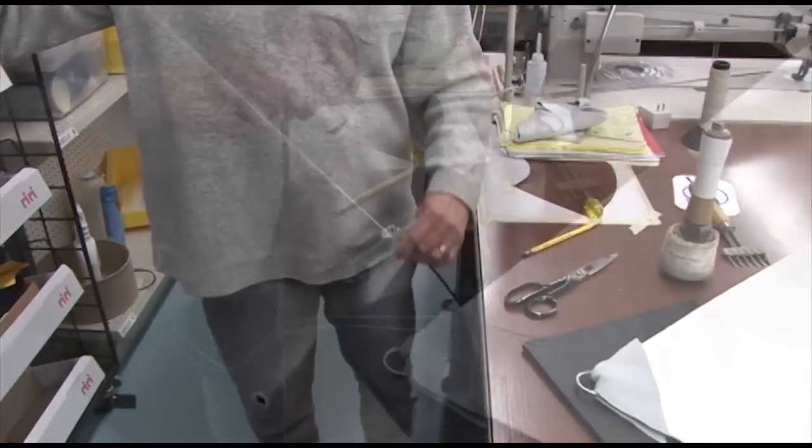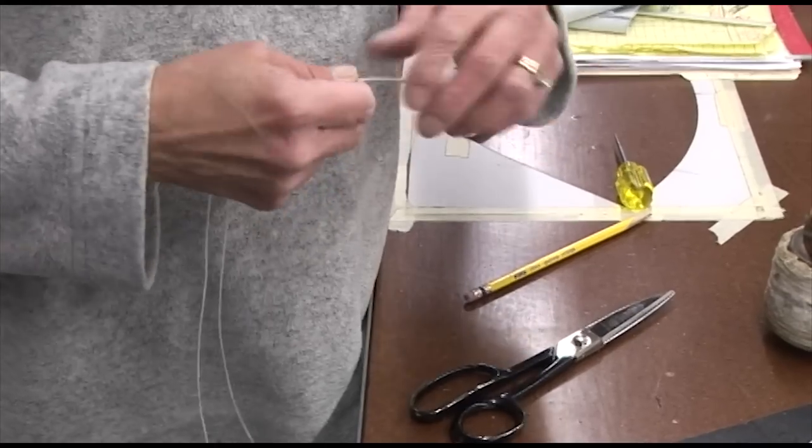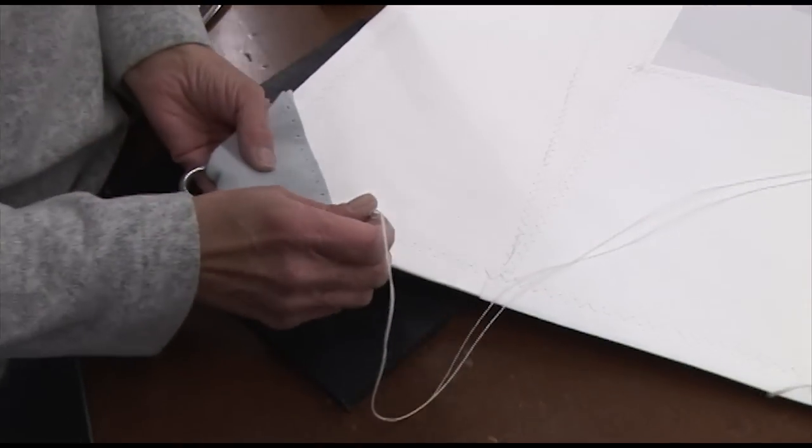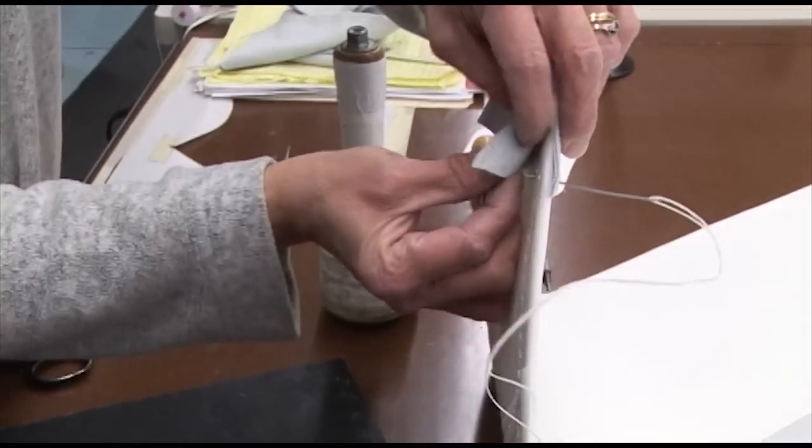Then we'll take our pre-waxed twine and our hand needle that's included in the kit, and we'll feed it through the eye of the needle and create a knot at the end. Then we'll feed it through these pre-punched holes along the edge of the leather patch.